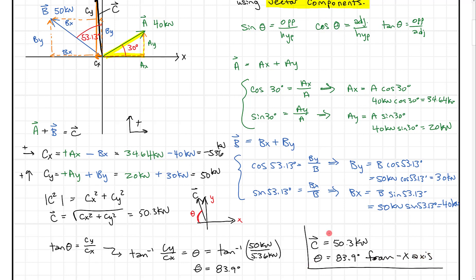So vector C has a magnitude of 50.3 kilonewtons with a direction of 83.9 degrees from the negative x-axis. All we did was use basic trigonometry: broke vectors into components, added them together, found the resultant magnitude with the Pythagorean theorem, and used the tangent to find our angle. You'll see these techniques in physics, statics with trusses, and more. Hopefully this clarifies basic vector addition — feel free to drop a comment if you have questions.